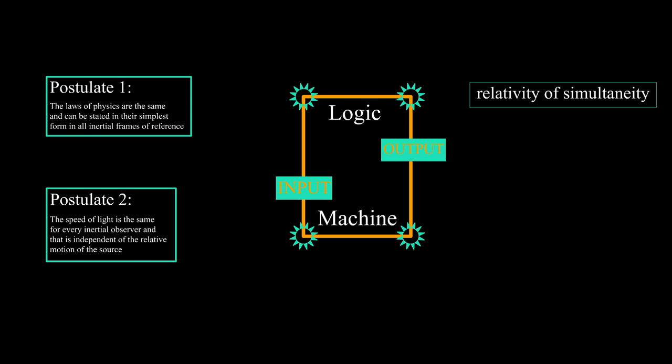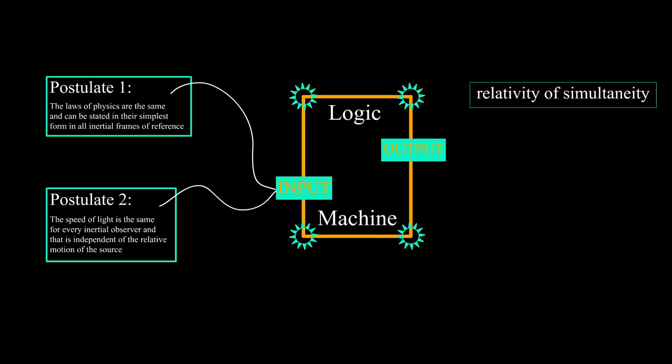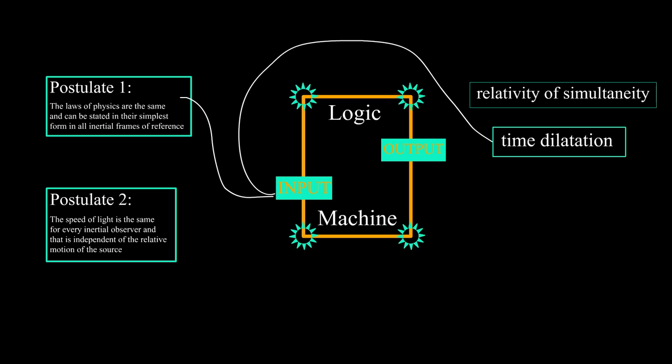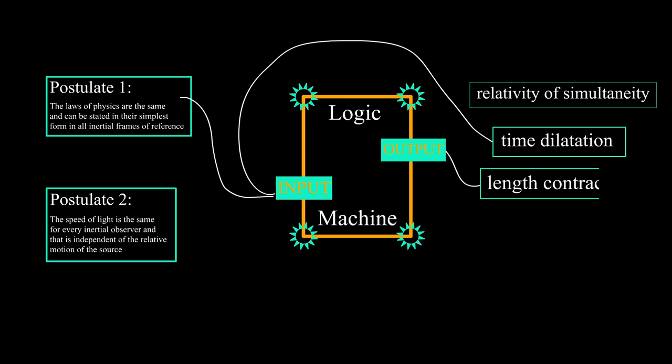Now I want to briefly mention the logic we used in this video. We used the two postulates and derived time dilation as a consequence of special relativity. Then we used time dilation together with the first postulate and derived length contraction. Basically, we needed length contraction in order for time dilation to make sense, otherwise we would have problems with the first postulate of relativity.